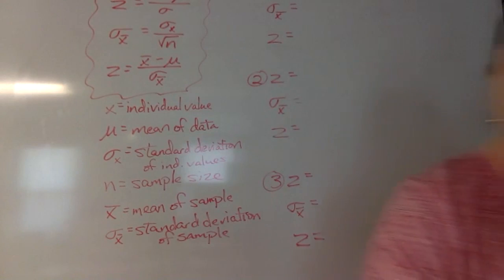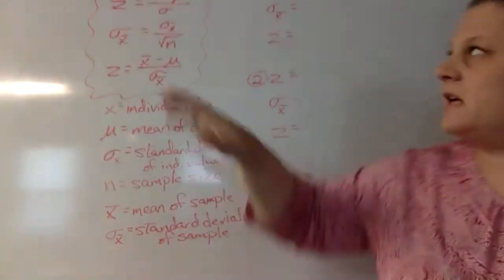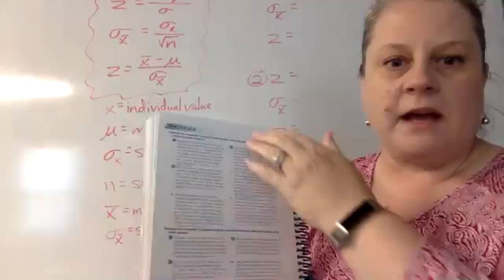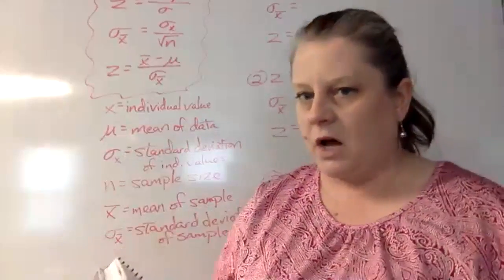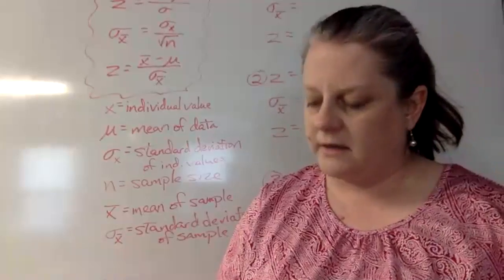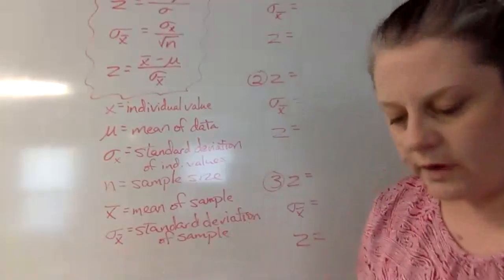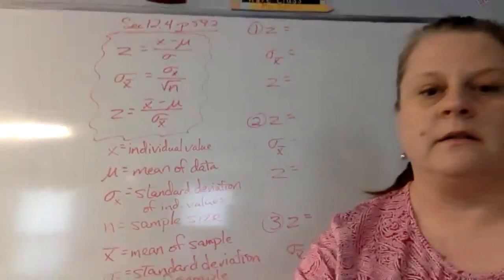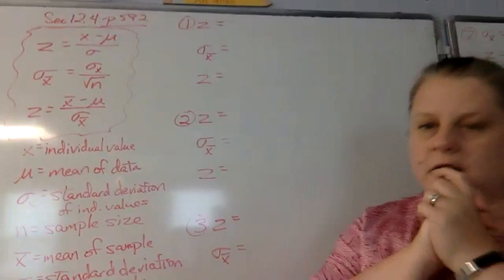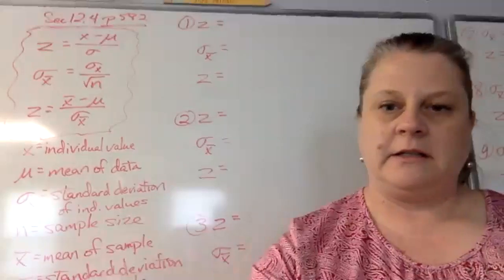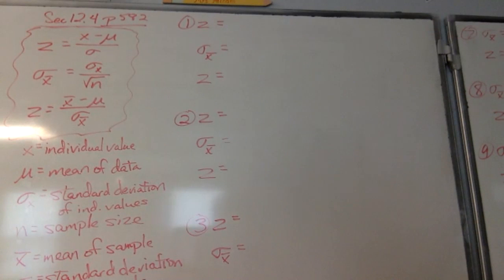We have six problems today on page 582, doing the teal problems — three at the top and three at the bottom, with separate instructions for each set. For the ones at the top, it says calculate the requested z-scores for each situation using the given mean and normal distribution standard deviation. So we're going to use all three formulas. We'll read the problem, plug the numbers into the formulas, use our calculators, and get our answers.